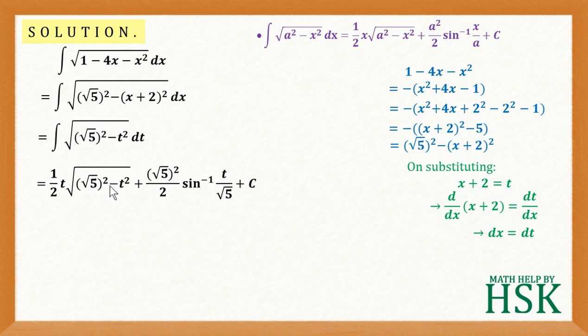This can be written as 5, but in the next step what I'm going to do is replace the value of t as x plus 2 and further simplify to get the final answer.